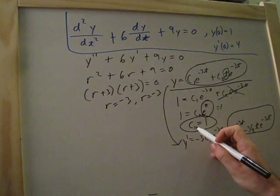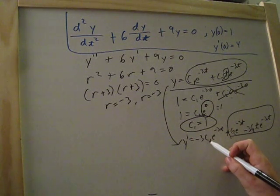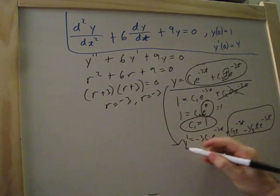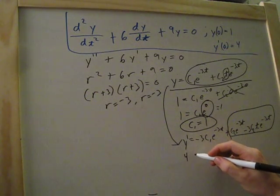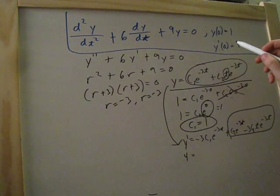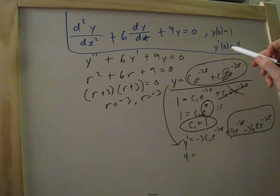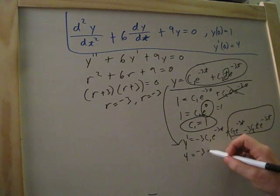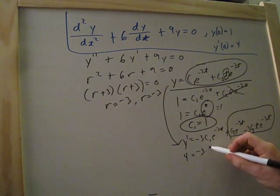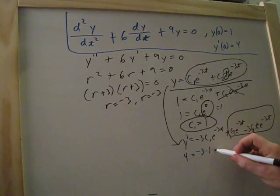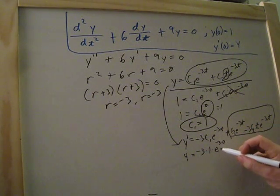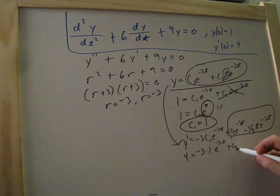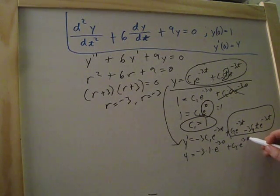So we know now that c1 is equal to 1. So we can go ahead and plug those in. And we also know that y prime of 0 is equal to 4. So we can go ahead and plug in 4 for y prime. Anytime we see a t now, we can plug in a 0. So let's go ahead and plug all the stuff in. So negative 3 times 1 times e to the negative 3 times 0